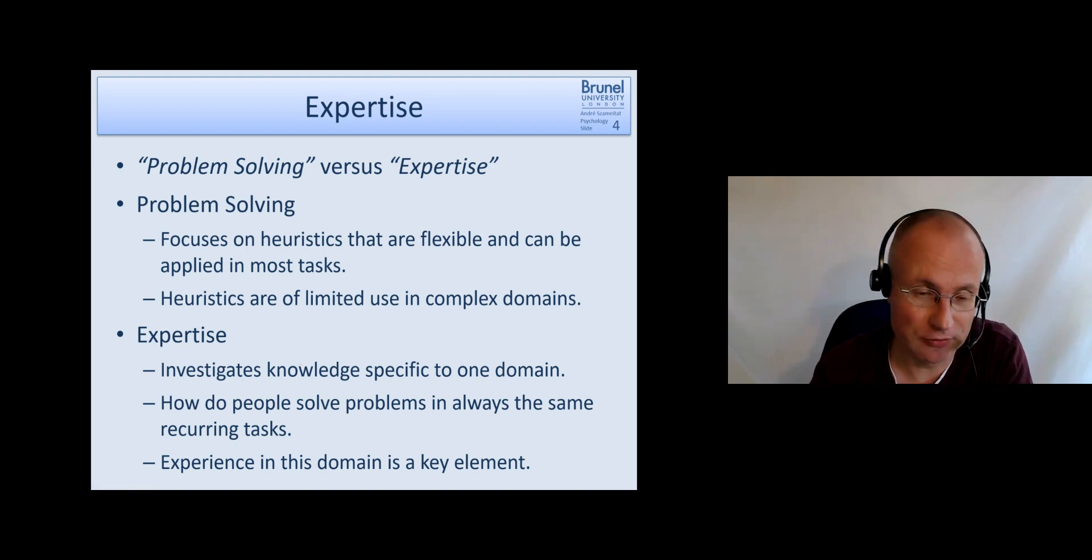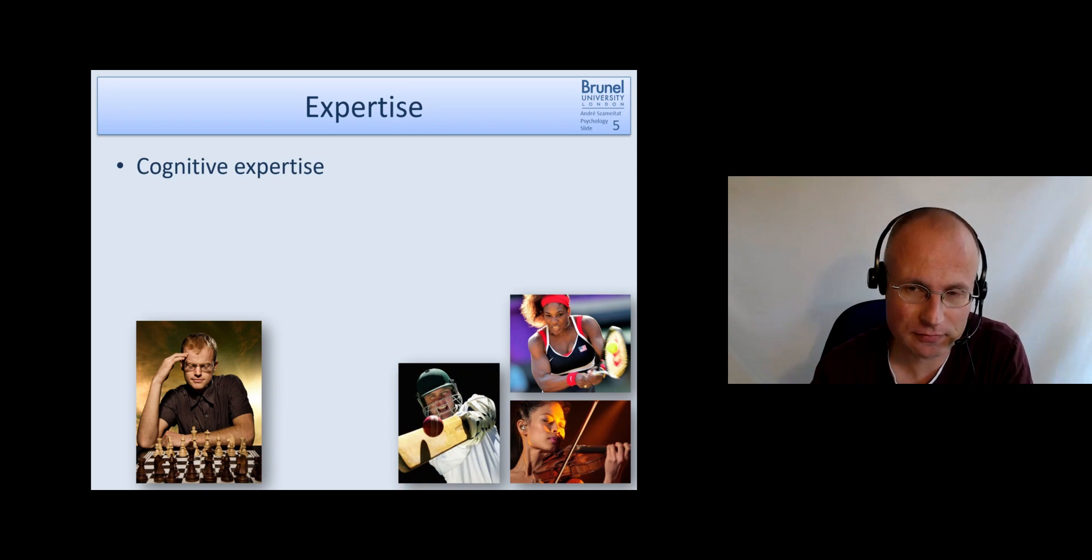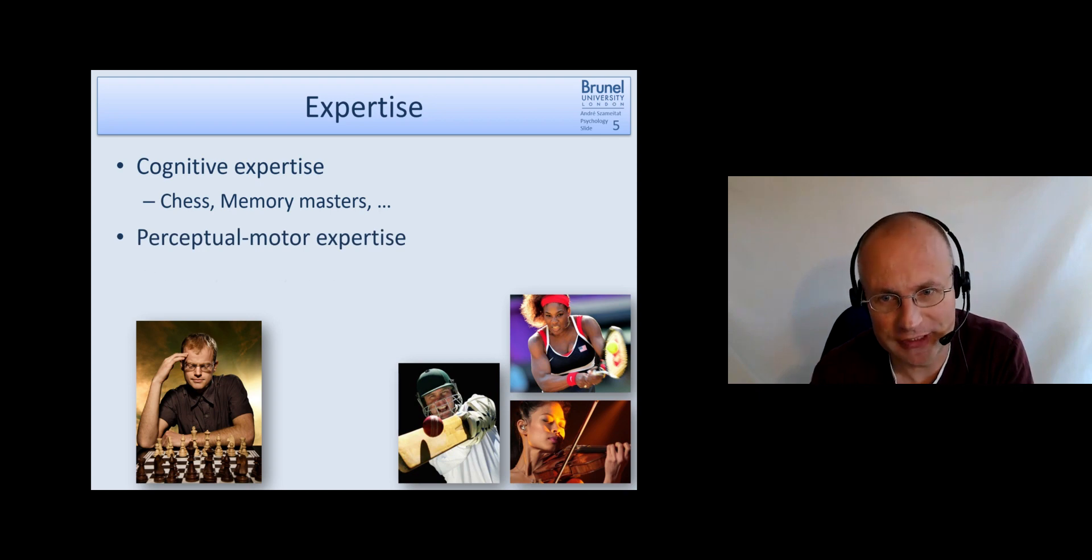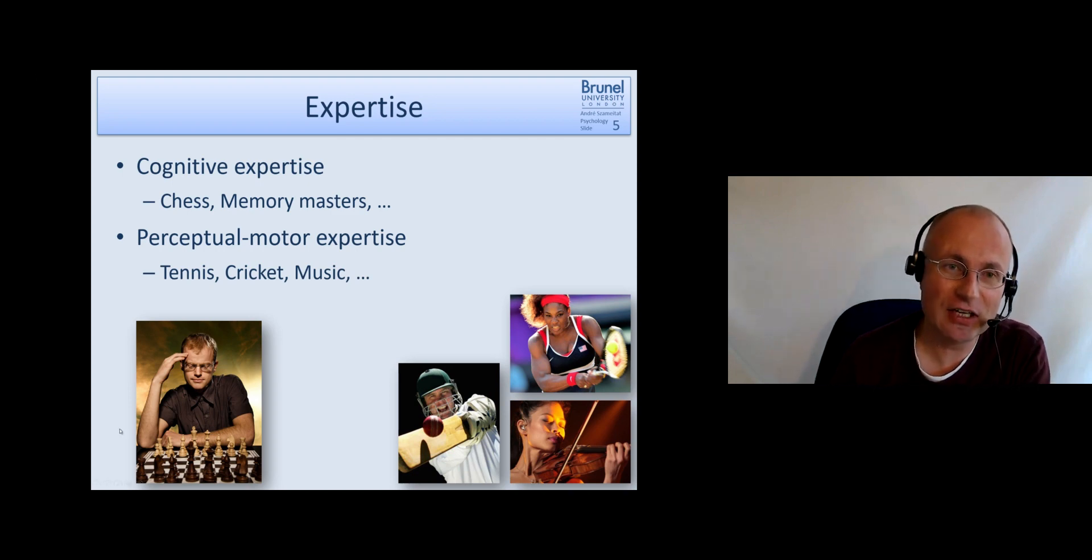There are different types of expertise. There's cognitive expertise like chess players and memory masters, and there is perceptual motor expertise like sports like tennis or cricket, playing musical instruments and things like that. In this brief lecture we will just focus on cognitive expertise and will not look at perceptual motor expertise.